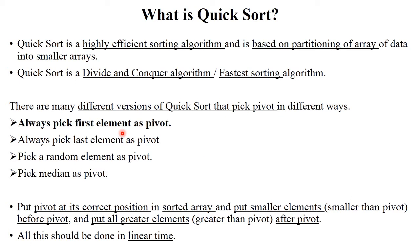We can choose any element in the list as the pivot. You can always pick the first element as pivot, the last element as pivot, a random element as pivot, or the median as pivot. But in this video, while solving examples, we always select the first element as the pivot element.